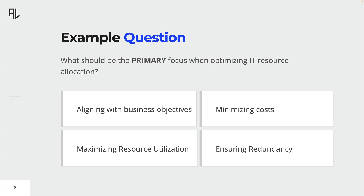To select the best answer, you should look out for keywords like best, worst, most, and so on. In this example, we are asked the following question: What should be the primary focus when optimizing IT resource allocation? The options provided all seem to make sense, meaning all of them should be put into consideration when optimizing IT resource allocation. However, the alignment with business objectives is the number one priority when allocating IT resources, as this is supposed to ensure that business objectives are actually met.